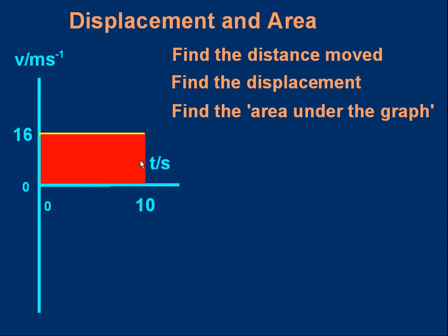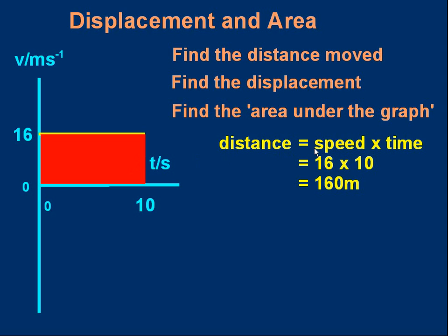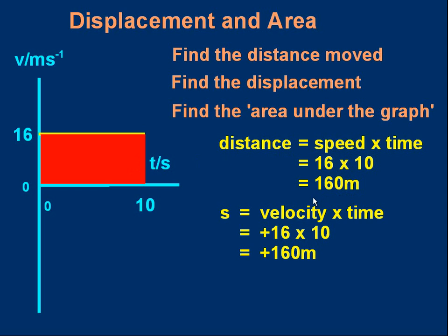Here are the answers. Distance is speed times time. The speed was 16 meters per second, the time was 10 seconds, so 16 times 10 is 160 meters. The displacement — we should really say average velocity times time, but it's a constant velocity so the average is the same as the constant velocity. Using S for displacement, it's plus 16 meters per second times 10 seconds, giving plus 160 meters. The plus sign reminds us we know the direction — 160 meters in the positive direction, which corresponds to the distance.